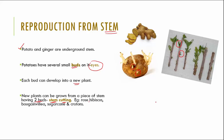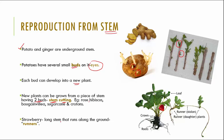Another very interesting way plants reproduce from stem is the example of strawberries. Strawberries have long stems that run along the ground — each of these stems gives rise to a small plant. These stems that give rise to new plants are called runners. So the three methods of reproduction from stem are: through buds or eyes, through stem cutting, and by using runners.